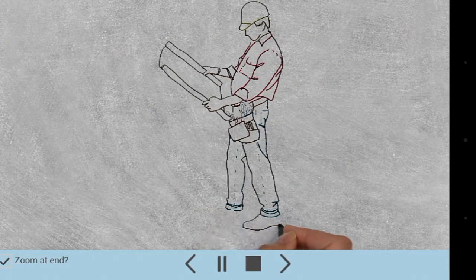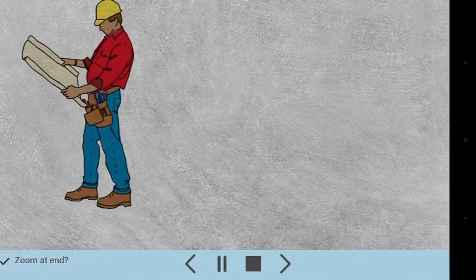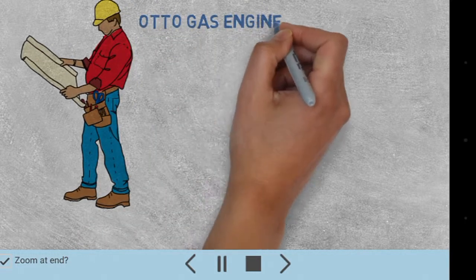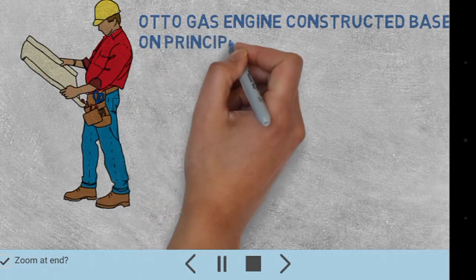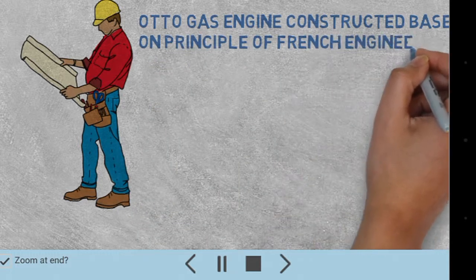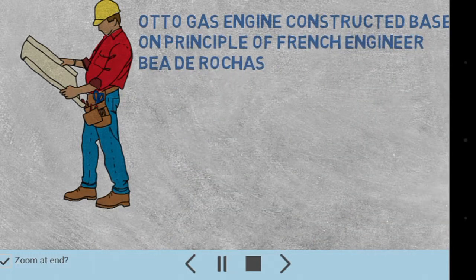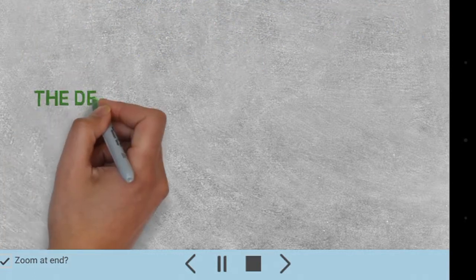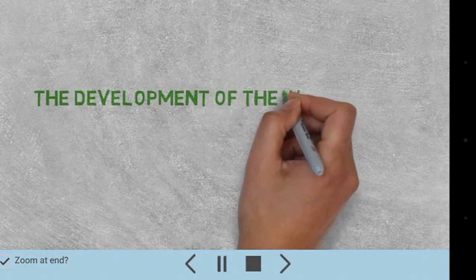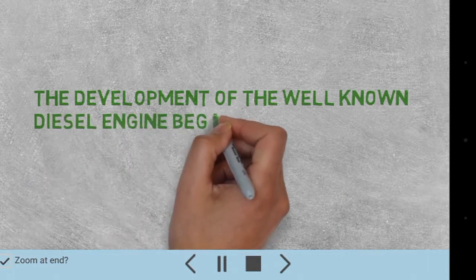Dr. Otto chose the principle of a French engineer, B.D. Rogers, and constructed his first gas engine. After that, a new series of engines was deployed by Rudolf Diesel in 1883.